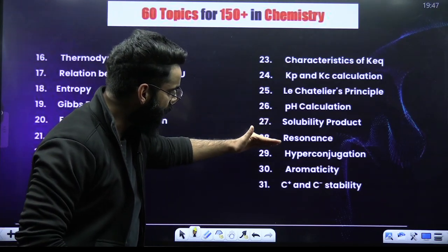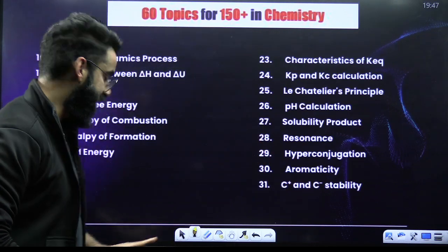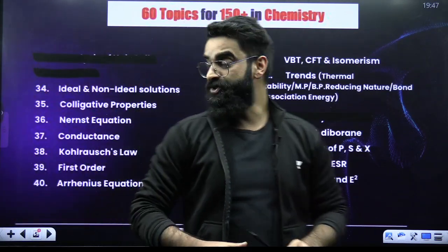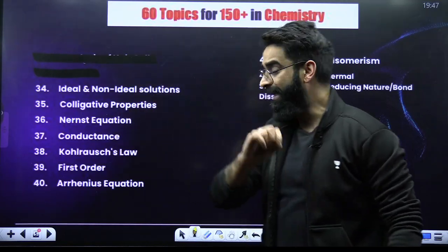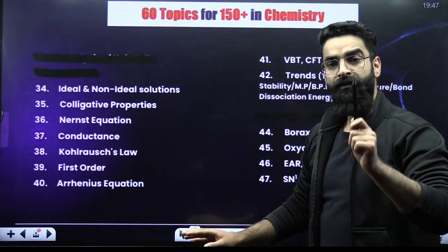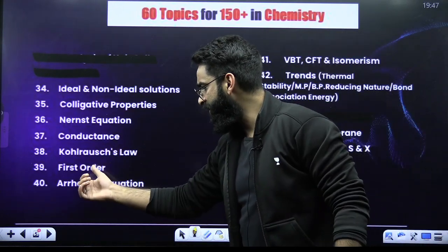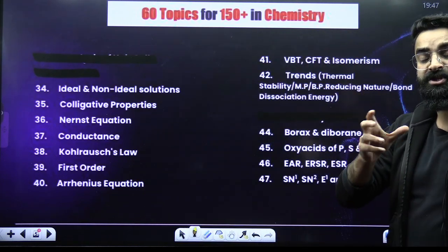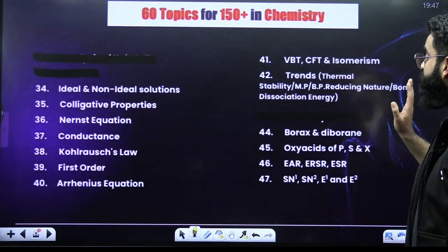Then GOC: resonance, hyperconjugation, aromaticity, carbocation, carbene instability. When it comes to the chapter on solutions, it's going to be ideal and non-ideal solutions, and colligative properties. From electrochemistry: Nernst equation, conductance, and Kohlrausch's law. From chemical kinetics: first order kinetics and the Arrhenius equation. Then for coordination chemistry: valence bond theory, crystal field theory, and isomerism.